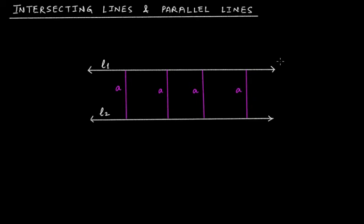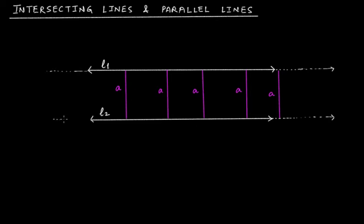If you extend these lines in this direction — since a line travels infinitely — and measure the distance between these two lines, it will again come to 'a'. You can continue this process of measuring the distance towards either side to an infinite position. Similarly, if you extend the line on the other side and measure the distance, it will again come to 'a'. It's just a rough hand-drawn diagram, so it may not appear perfectly straight.